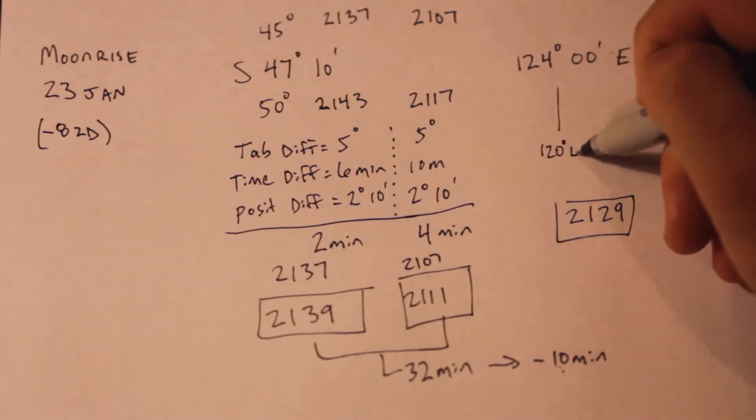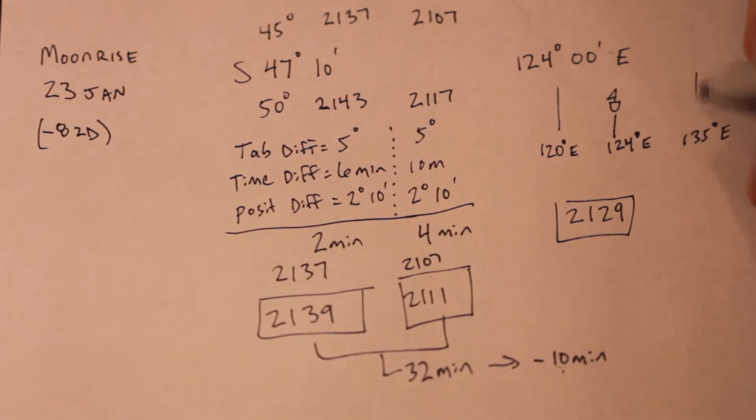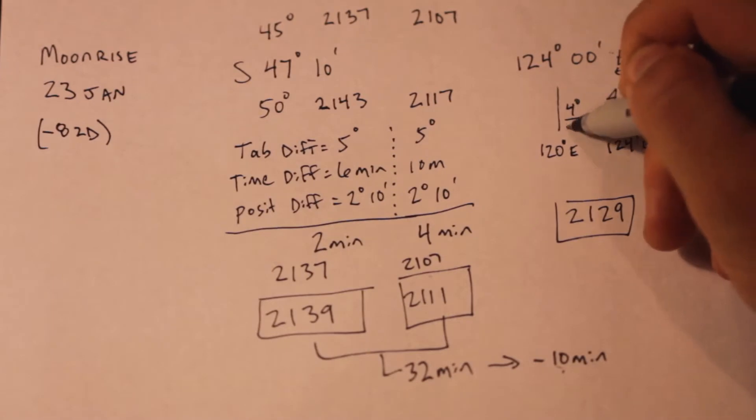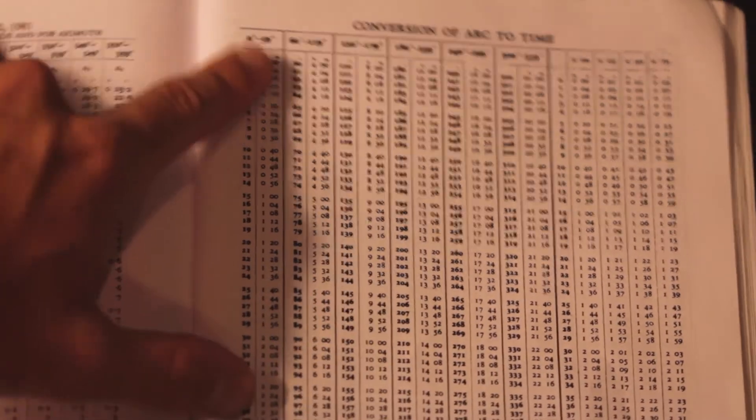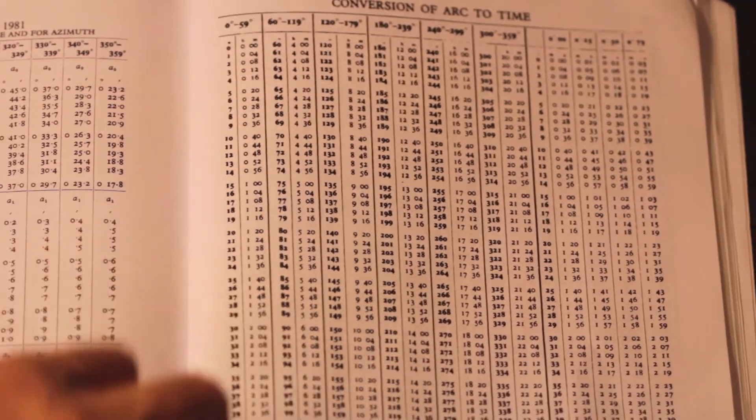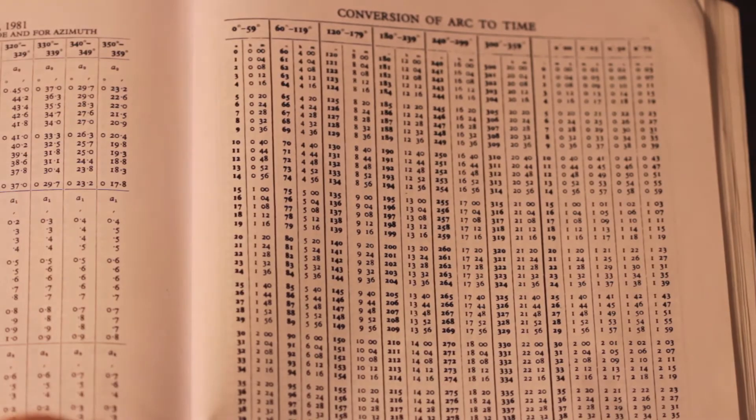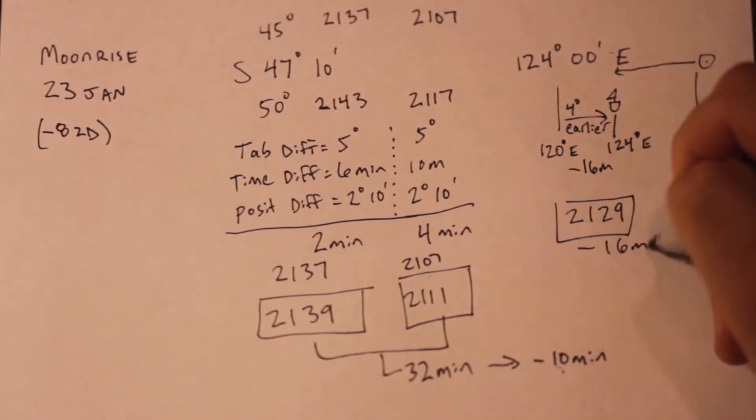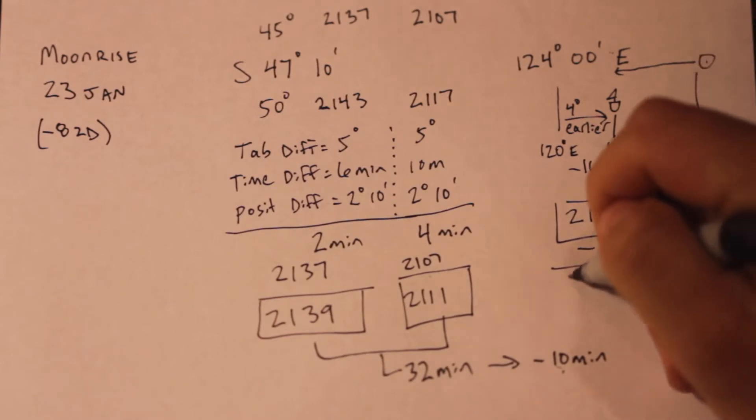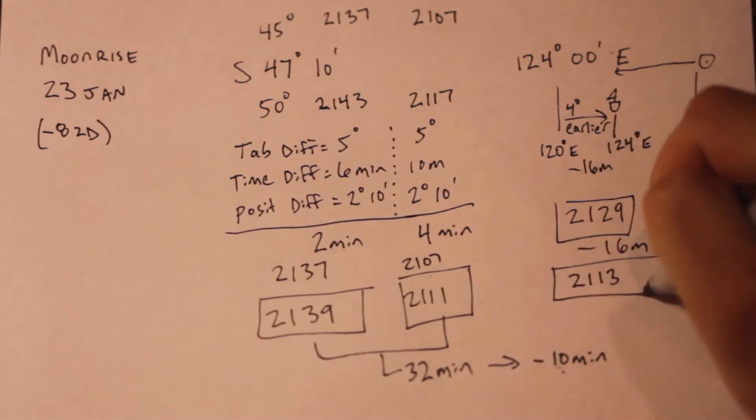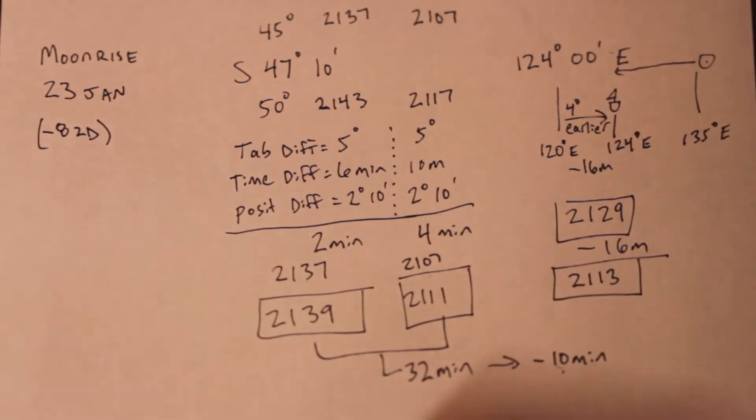But don't forget, that is for standard meridians. We're observing minus 8 zone descriptor, which corresponds to 120 degrees east. We're at 124 east, and therefore we need to account for those 4 degrees. So again, in the eastern hemisphere, we need to pay particular attention to our thought process, especially if we're used to doing this for somewhere else in the world. Events will happen earlier for us at 124 east, so we need to subtract the appropriate amount of arc, which is 16 minutes, for 4 degrees. This gives us a final moonrise time of 2113.